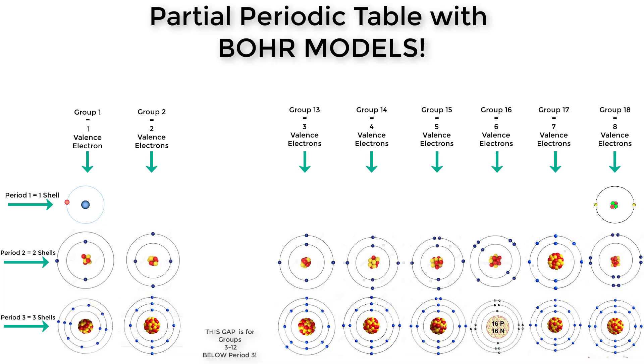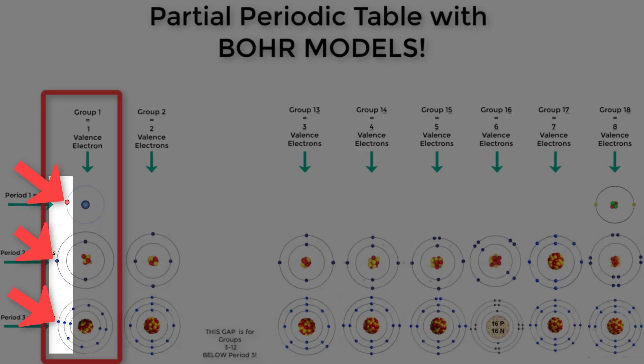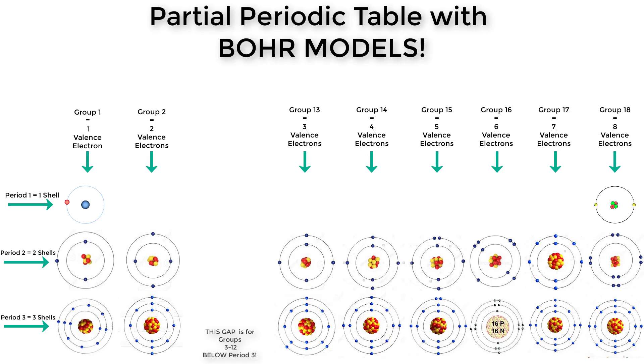Same thing for the columns. Each element in group one has only one valence electron in that outer shell. Please make sure you ask questions if any of this isn't quite clicking yet. We will definitely practice this, and I know you will discover the pattern soon.